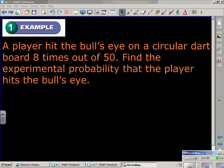In example one, we're talking about experimental probability. A player hit the bullseye on a circular board eight times out of 50. Find the experimental probability the player hits the bullseye. So based on the previous results, we're going to predict the probability that the player is going to hit the bullseye again. To do this, we are going to write out our probability.